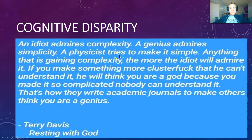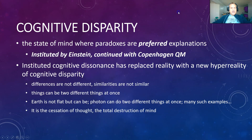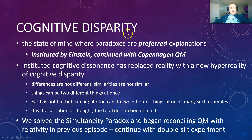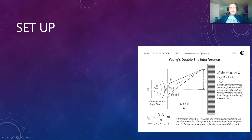It's the physicists that are doing it — they're not making it more simple, they're making it more complex. Hockney is, of course, making it more simple. Illuminism and ontological mathematics are making it more simple. So we solved the simultaneity paradox and began reconciling quantum mechanics with relativity in the previous episode. We will continue with the double-slit experiment now.